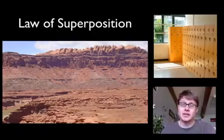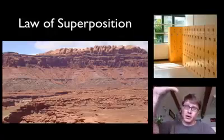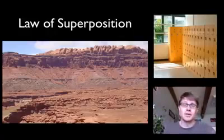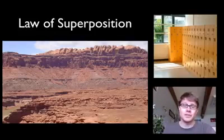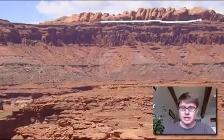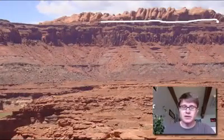The law of superposition essentially says the older rock is normally going to be found on the bottom. Right here we're looking at a section from the Grand Canyon, and you can see that all the rock above this line looks very similar — it's actually called Navajo sandstone.